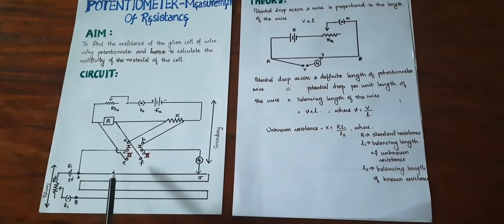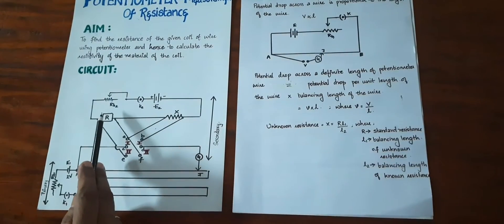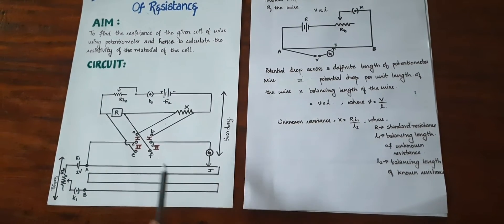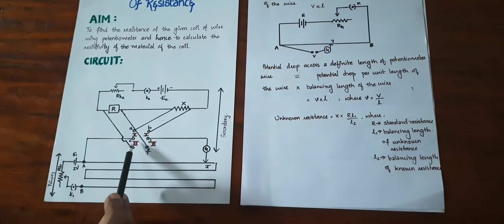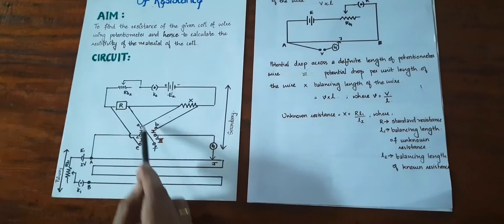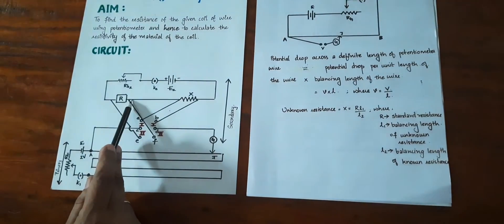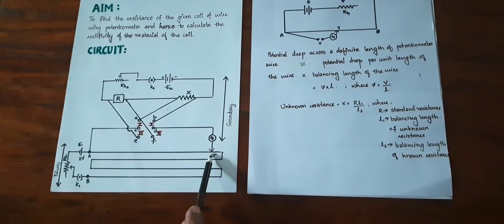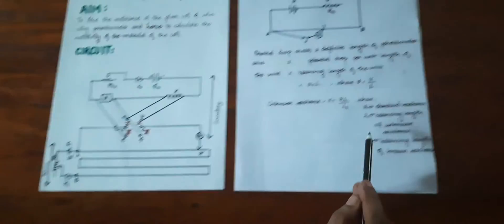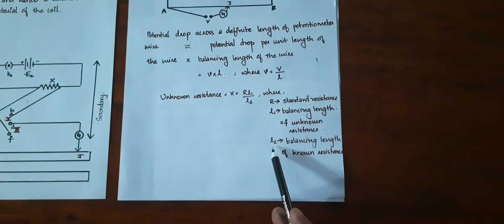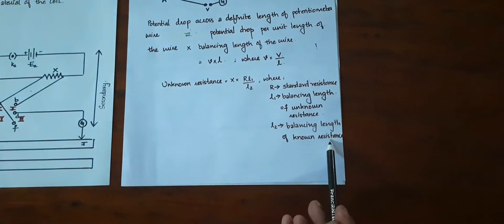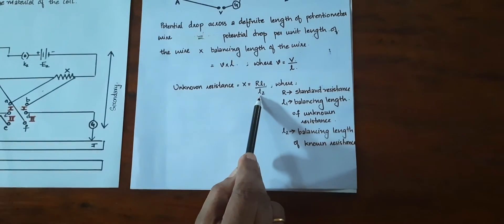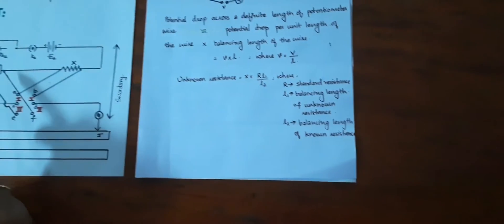In the next stage, we will apply the voltage across the known standard resistance R into the primary circuit. We will introduce the key to those points so that the potential difference across R is the unknown voltage. We will call the balancing length at this point L2. So L1 is the balancing length of the unknown resistance and L2 is the balancing length of the known standard resistance. The unknown resistance X can be calculated as X = R × (L1 / L2), where R is the standard resistance introduced in the circuit.